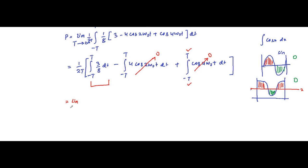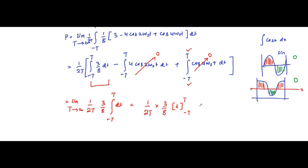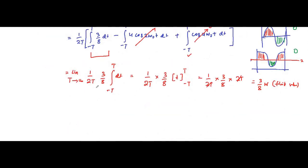So we are only left with: P = limit T→∞ of (1/2T) × integral from -T to T of (3/8) dt = (1/2T) × (3/8) × 2T. The 2T cancels, giving the final power P = 3/8 watts, which is a finite value. Our guess that it is a power signal seems correct, but we still need to calculate the energy.